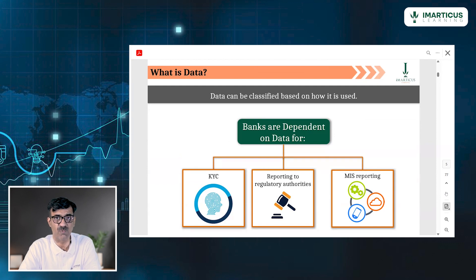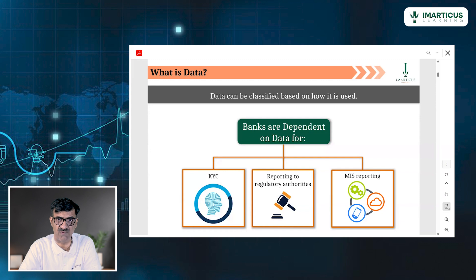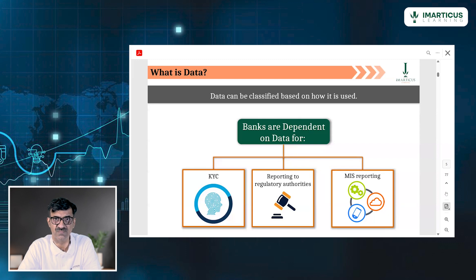There is data required for knowing your customer — banks require that, that's what you call KYC. Then you may require data to be reported to regulatory authorities. And of course, very interesting data is required for management information system reporting. Why is KYC required? Because there have been a lot of cases of hawala, smuggling, money laundering. To avoid all that, we require identity. To prevent criminal money flowing into the system, we require KYC.